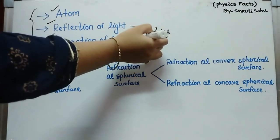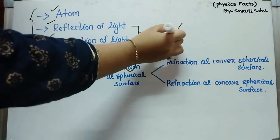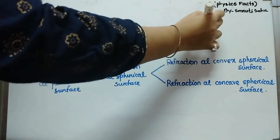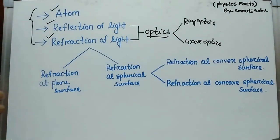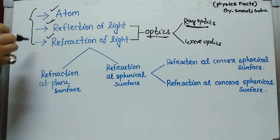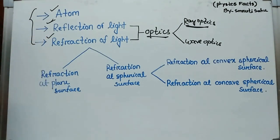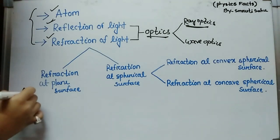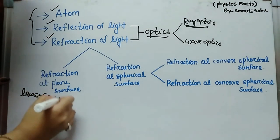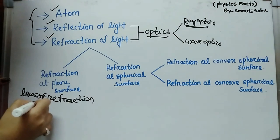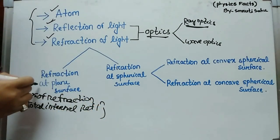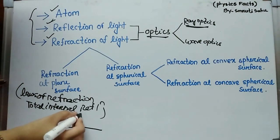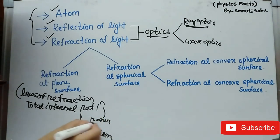In optics, in the first video we discussed that optics is divided into two categories. One is ray optics, in which we discuss the particle nature of light. Another one is wave optics, where we discuss the wave nature of light. In ray optics, we discussed reflection of light and refraction of light. From laws of refraction to total internal reflection, all these topics involve refraction at a plane surface — that is, the interface between two media is a plane surface.